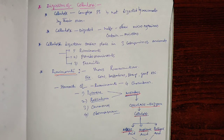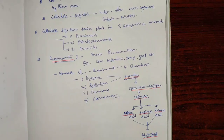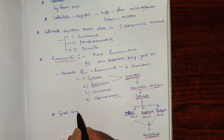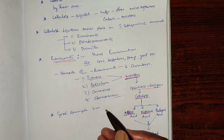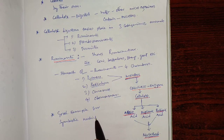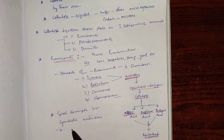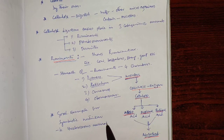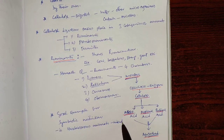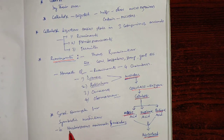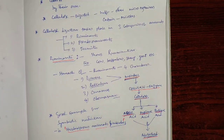Ruminants are also a good example of symbiotic nutrition. Herbivorous animals and microbes together represent the best example of symbiotic nutrition.